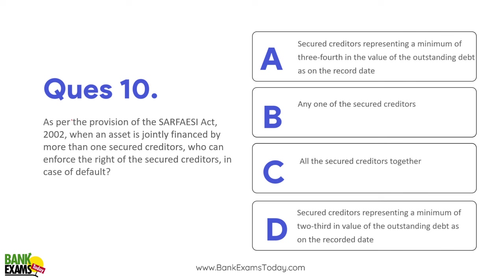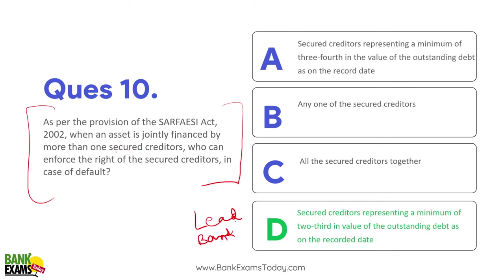As per the provisions of the SARFAESI Act 2002, when an asset is jointly financed by more than one secured creditor, who can enforce the rights of secured creditors in case of default? Secured creditors representing a minimum of two-thirds in value of the outstanding debt can initiate action — they will become the lead bank, and the lead bank takes the decision.